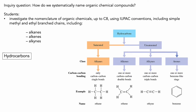Now we'll start looking at the first dot point of the syllabus: nomenclature of organic chemicals up to octane, including simple methyl and ethyl branch chains. Looking at hydrocarbons, they can be split into saturated or unsaturated. Alkanes have a single bond between the carbons, alkenes have at least one double bond, and alkynes have at least one triple bond between the carbons. That's the basic difference between alkanes, alkenes, and alkynes.